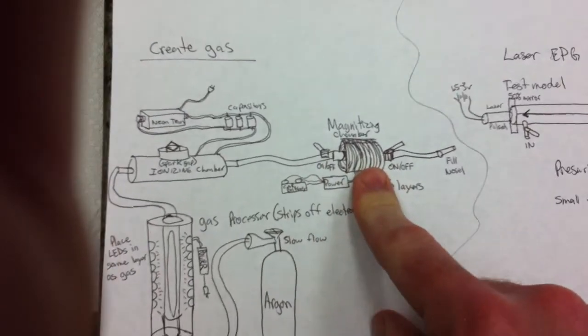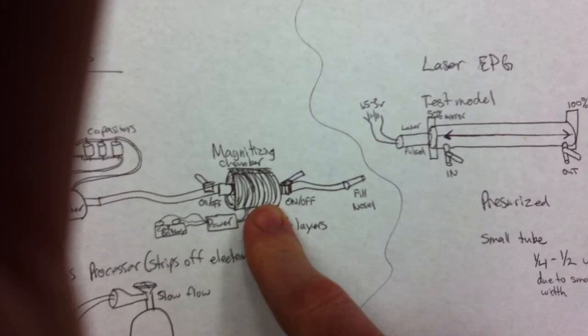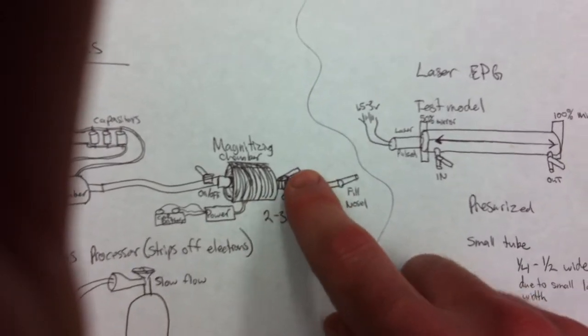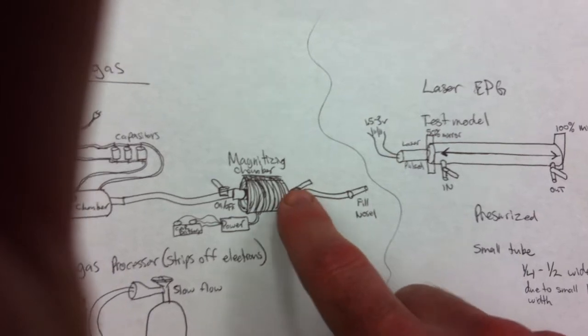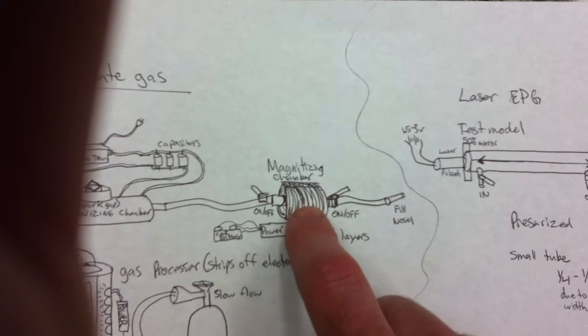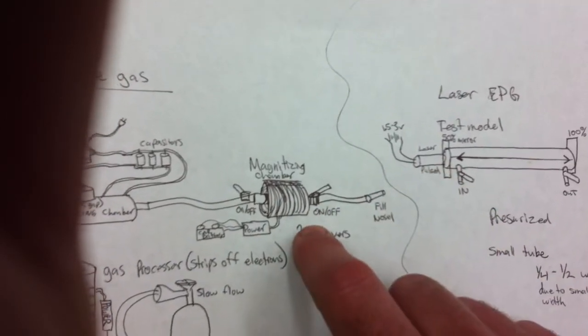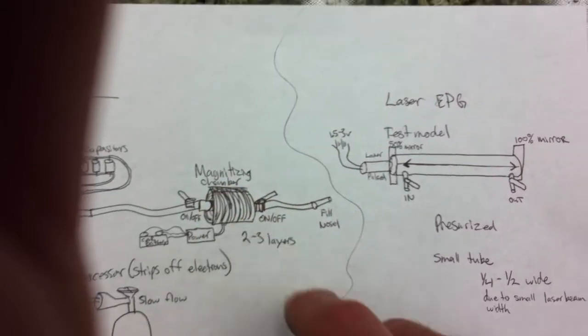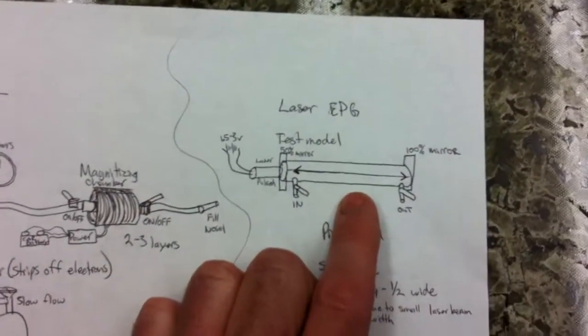That combination is going into my magnetizing chamber. And what I'm going to do is I've got a valve on each side. I'm going to shut it off, let the pressure build up inside. Shut this one off. Magnetize it. Undo this valve and fill my container. And repeat that process until I have the desired pressure in my laser EPG.